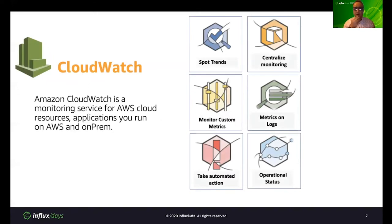Let's talk about Amazon CloudWatch. It is a monitoring service for AWS cloud resources and the applications you run on AWS and on-premises. You can use it to collect and track metrics, collect and monitor log files, set alarms, and automatically react to changes in your AWS resources. CloudWatch can monitor AWS resources such as Amazon EC2 instances, Amazon DynamoDB tables, and Amazon RDS DB instances, as well as custom metrics generated by your applications and services and any log files your applications generate. You can gain system-wide visibility into resource utilization, application performance, and operational health.